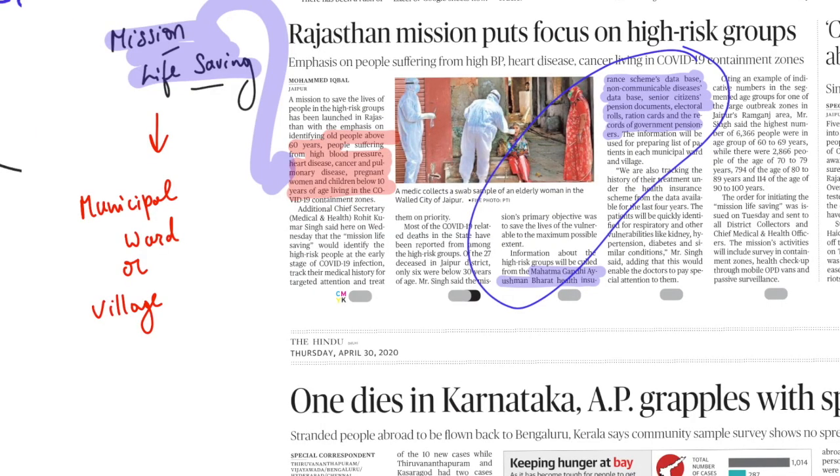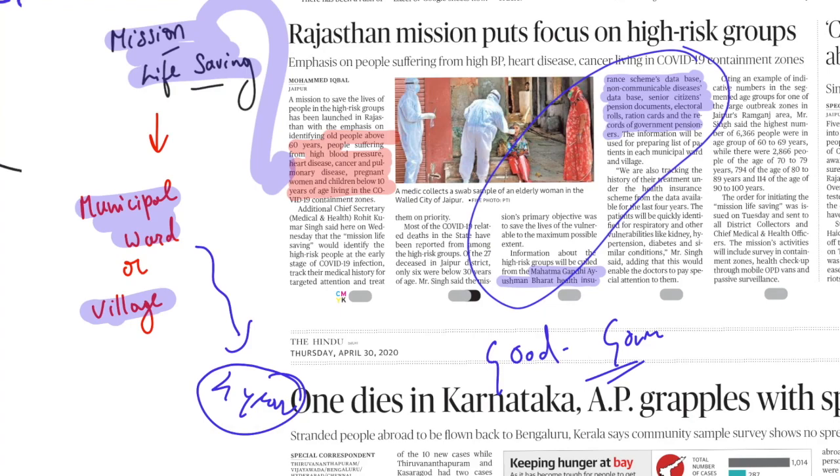And once all the information has been taken, the list of the vulnerable people on the basis of their municipal ward or on the basis of their village will be made. And not only the list will be made, but their last four years medical history will also be checked and then they will be ascertained whether they are having any kind of respiratory disease or any other disease which might be a symptom or they might be vulnerable to infect the COVID-19 into the future. So this is an excellent initiative which reflects the good governance and the concern of the government for its citizens. Excellent example for GS paper number two governance.